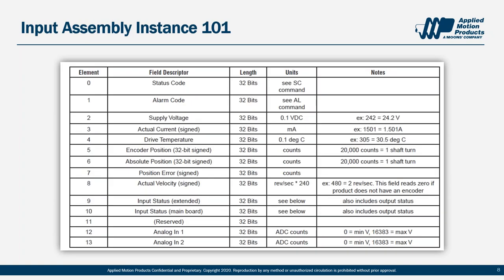The input assembly — instance 101 — contains just about everything the PLC needs to know: drive status, I/O status, position, velocity, and so on. Each of the 14 elements in the array is 32 bits long, making decoding in the PLC simple. This is the input assembly our AOIs use and it's the default in our EDS files. Instance 100 is provided only for backward compatibility with legacy applications — if you're designing something from scratch, use 101. Remember: the input assembly comes from the drive and goes to the PLC, refreshed every RPI interval.